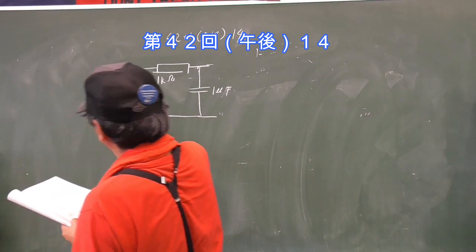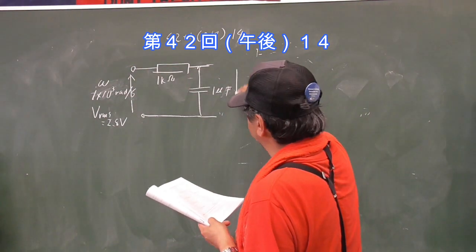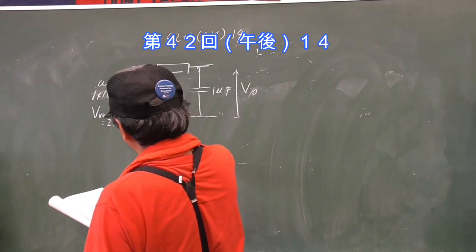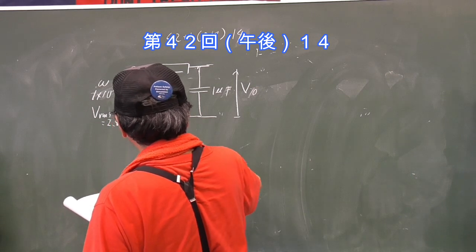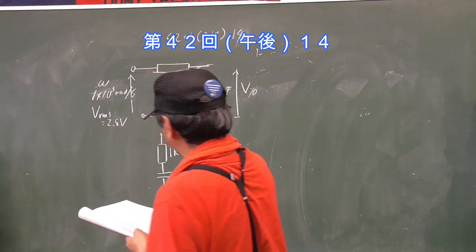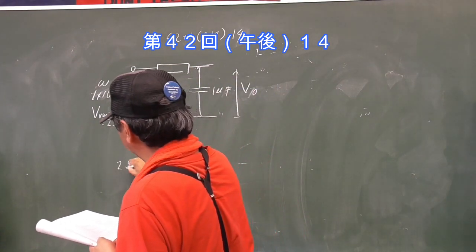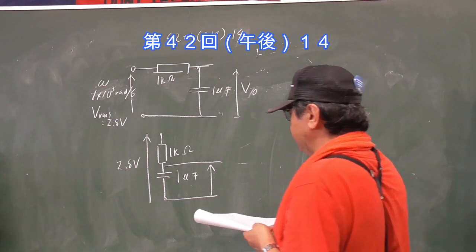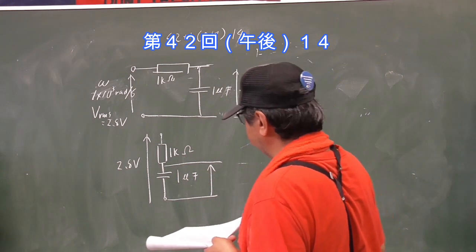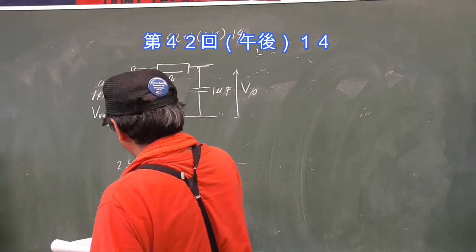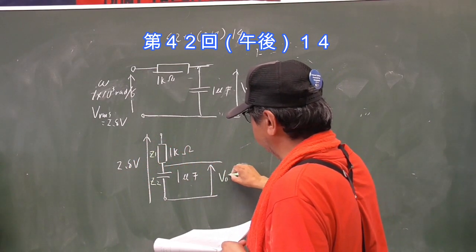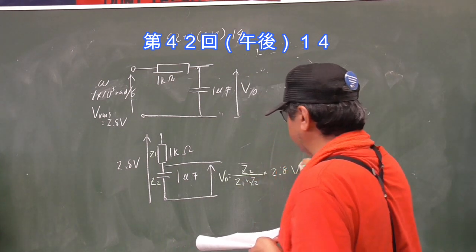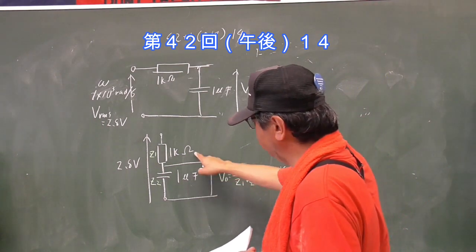実効値が2.8Vを加えましたという、その時にここの電圧はいくらになるかということを考えてみましょう。Voutですね。これはまず分からない時にはとりあえず1kΩとこうして1μFの縦の直列回路でここが2.8Vなんだよとね。その時にここの電圧がいくらになりますかということを聞かれているんだと思ってください。もしも2つとも抵抗だったら、このZ1、Z2としますね。そうするとここの電圧VoutはZ1たすZ2分のZ2かける2.8Vだということは分かるよね。